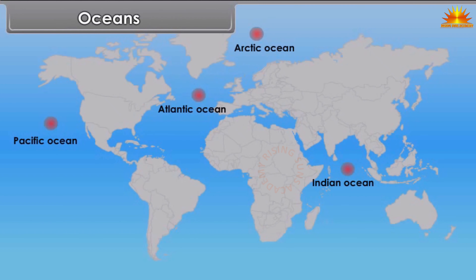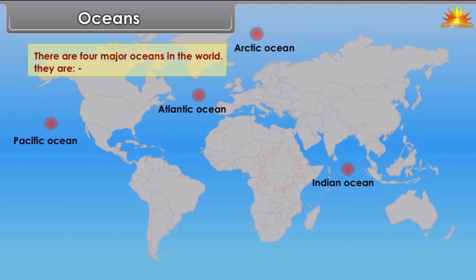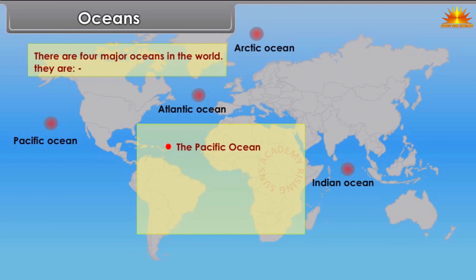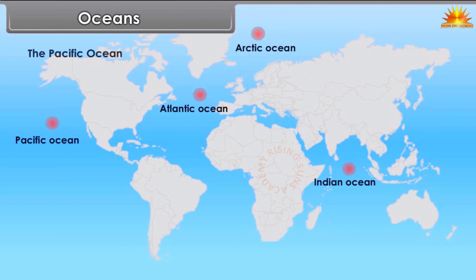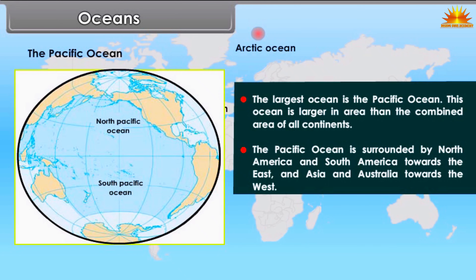There are four major oceans in the world: the Pacific Ocean, the Atlantic Ocean, the Indian Ocean, and the Arctic Ocean. The largest ocean is the Pacific Ocean, which is larger in area than the combined area of all continents. It is surrounded by North America and South America towards the east, and Asia and Australia towards the west.